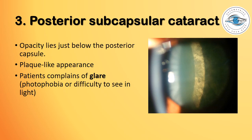In posterior subcapsular cataract, the opacity lies just below the posterior capsule and presents with a block-like appearance. Patients usually complain of glare, i.e., photophobia, or difficulty seeing in bright light.